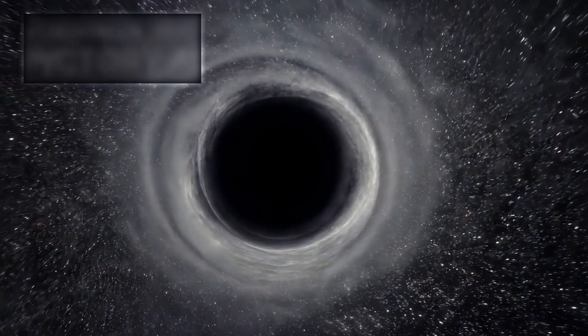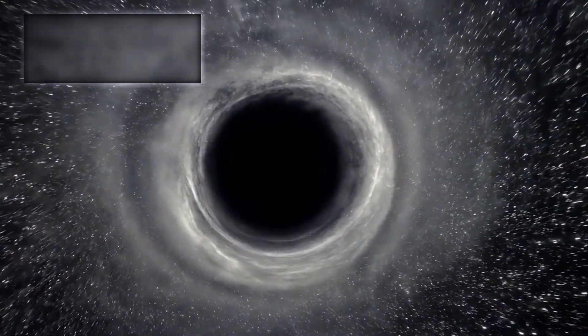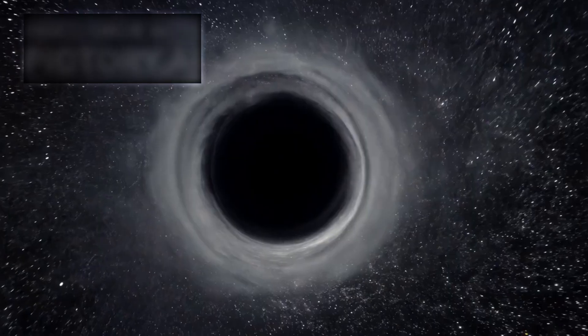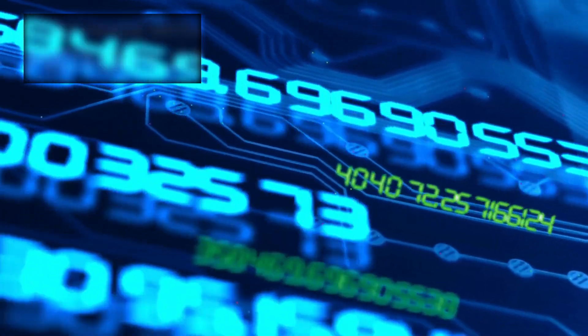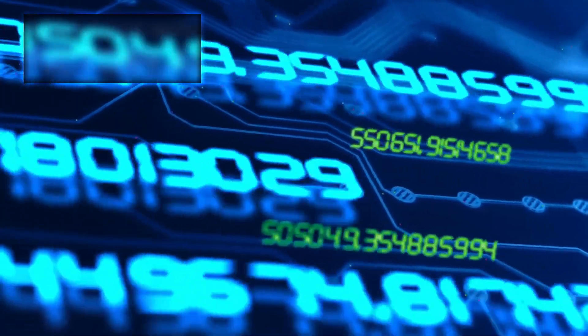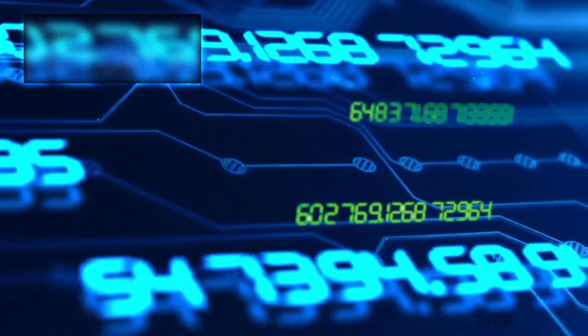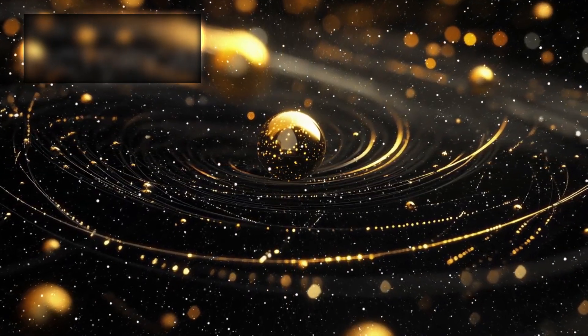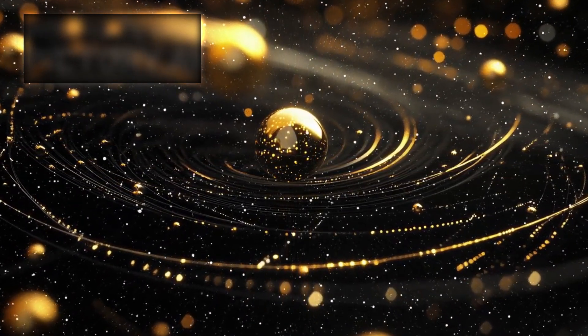Super-string theory is still highly theoretical, lacking direct experimental evidence. Yet, it holds tremendous promise in addressing some of the most puzzling aspects of black holes. For instance, it offers potential resolutions to the black hole information paradox, the question of whether information that falls into a black hole is lost forever or somehow preserved. Quantum mechanics insists that information cannot be destroyed, yet general relativity suggests it vanishes at the singularity. Reconciling this paradox could unlock the key to quantum gravity, a long-sought goal in theoretical physics.